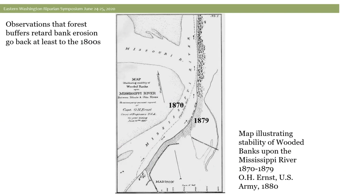I love looking back at what people have observed through the past. Here's a nice one someone found in an old bookshop in New Orleans — a map showing the confluence of the Missouri and Mississippi. The title is 'Illustrating the Stability of Wooded Banks.' You can see the forested area in the upper right, with the 1870 and 1879 channel bank lines. Very little change along the forested bank and a lot more erosion in the tilled land. It took the scientific community about a hundred years to catch up.